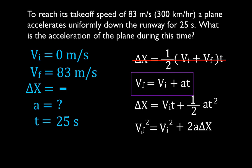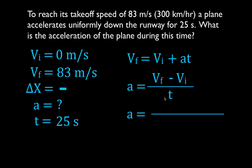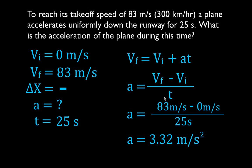The other two equations have acceleration in them, but they also have the change in position, and we don't know the change in position, so we cannot use those equations. We're solving for the acceleration, so we rearrange the equation first: acceleration equals final velocity minus initial velocity divided by time. That's our standard definition of acceleration — change in velocity over change in time. Plugging in values: 83 minus 0 divided by 25 seconds gives an acceleration of 3.32 meters per second squared. That is example number one.